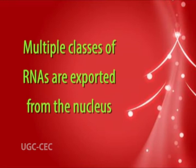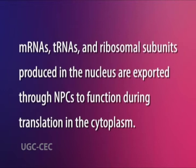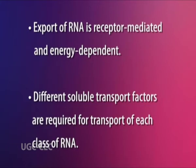Multiple classes of RNAs are exported from the nucleus: mRNAs, tRNAs, and ribosomal subunits produced in the nucleus are exported through NPCs to function during translation in the cytoplasm. The same NPCs used for protein transport are also used for RNA export. Export of RNA is receptor-mediated and energy dependent, and different soluble transport factors are required for transport of each class of RNA.